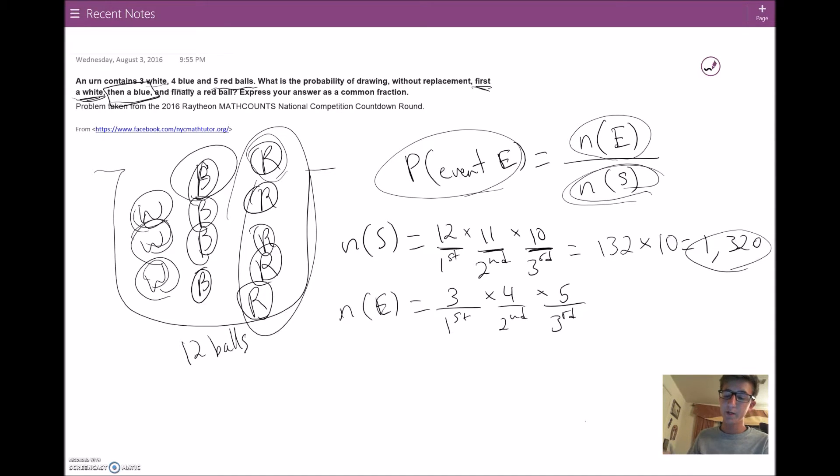If you need any explanation on that, just comment below if you have any questions. So what's three times four? Good, 12 times five. So that's just 60. We get 60 ways of choosing first a white, then a blue, and finally a red ball. That's n(E) - the number of ways event E occurs.